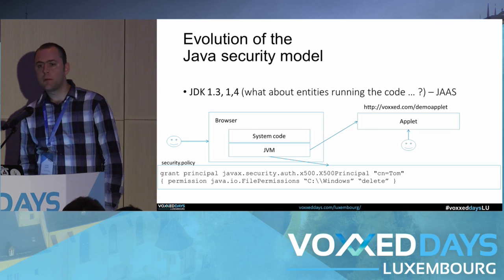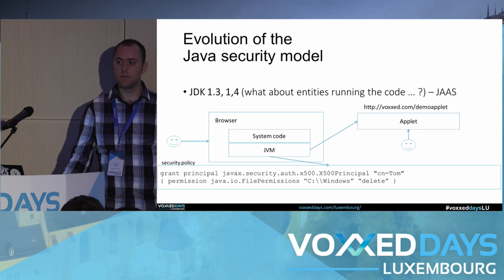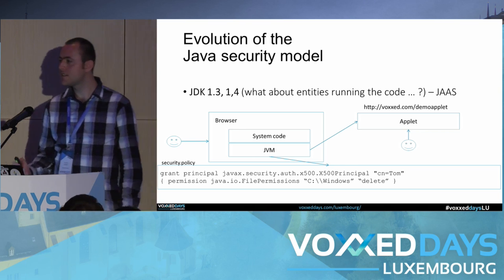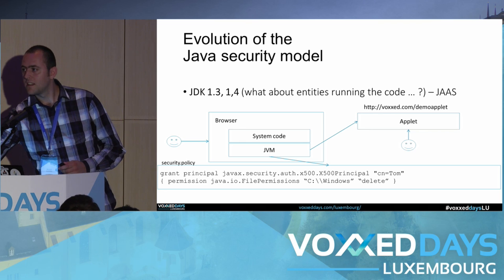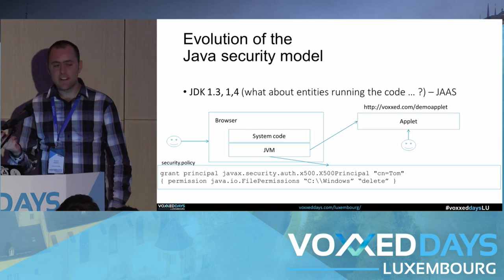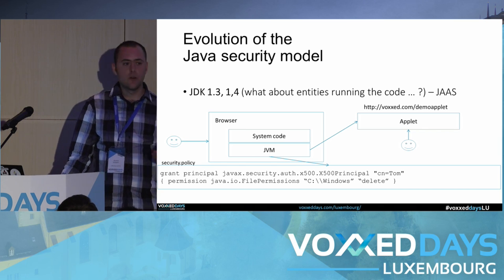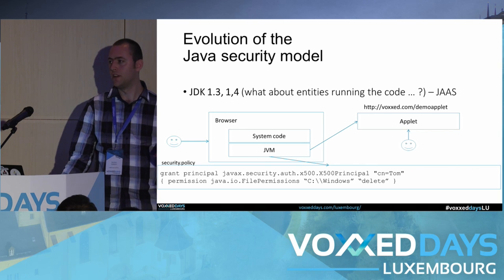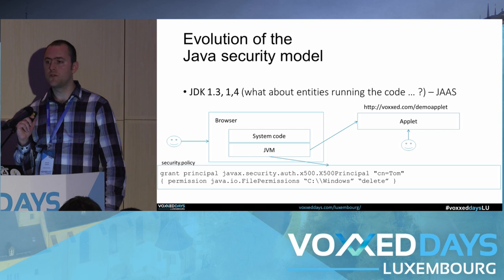Moving toward versions 1.3 and 1.4: a new thing called JAAS was introduced — Java Authentication and Authorization Service. Up to version 1.2, permissions were identified only based on the code base. There was no way to identify the user executing the code. In version 1.3, a mechanism was introduced that allowed you to specify the user or properties of the user that executed the source code.